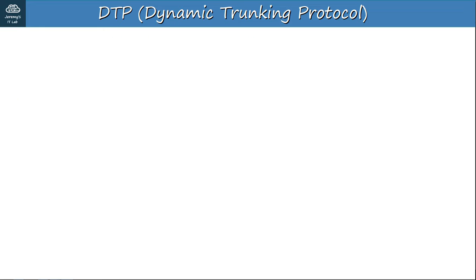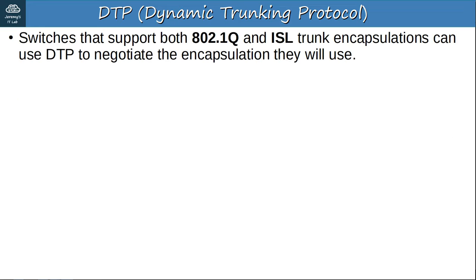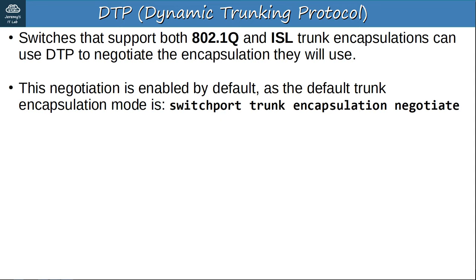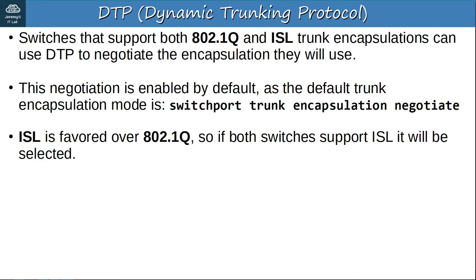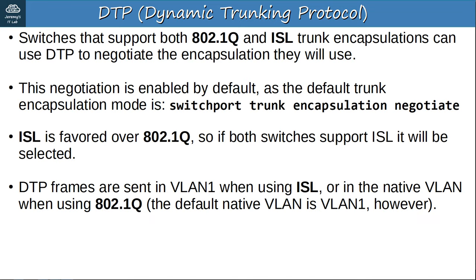Switches that support both DOT1Q and ISL trunk encapsulations can use DTP to negotiate the encapsulation they will use. This negotiation is enabled by default, as the default trunk encapsulation mode is 'switchport trunk encapsulation negotiate.' If you want to manually configure a trunk on a switch that supports both, you must first change the encapsulation mode to DOT1Q or ISL. ISL is favored over DOT1Q, so if both switches support ISL it will be selected. DTP frames are sent in VLAN 1 when using ISL, or in the native VLAN when using DOT1Q.